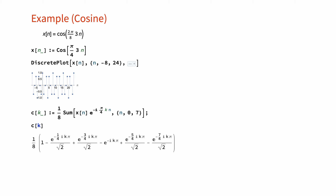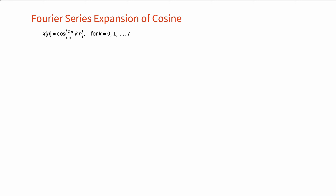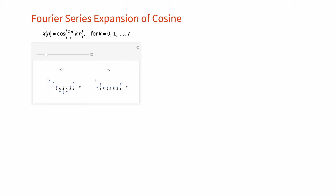For our periodic cosine function with period N equal to 8, we can look at the values of the eight Fourier series coefficients. As it was the case for continuous time signals, a periodic sine or cosine sequence is represented by a pair of non-zero Fourier series coefficients. These results can be generalized, and we can verify them by checking the magnitudes of the Fourier series coefficients of all cosine sequences of period N equal to 8 — it is true for all cosines.